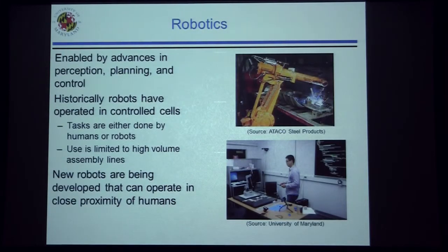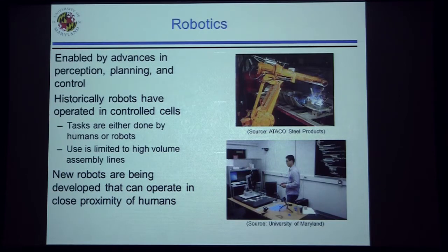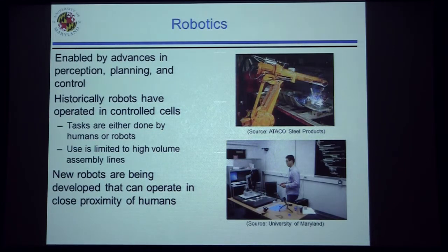The second innovation is robotics, enabled by advances in perception, planning, and control — all enabled by information technology. Traditionally, robots have been used in isolated controlled cells, where a robot does a task and humans would not enter that cell. Robotics have historically been used in high-volume production such as automotive manufacturing, where structural elements are welded or painted by robotic technology.